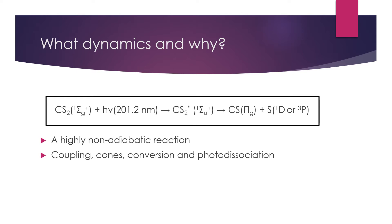The polyatomic molecule is excited from its ground state by a pulse of light of wavelength 201.2 nanometers into an excited state. This excited state quickly dissociates, producing carbon sulfide in its ground state with πg symmetry, and sulfur in either the singlet or the triplet state.